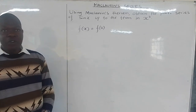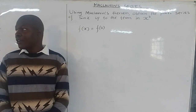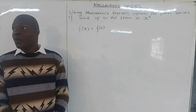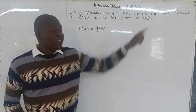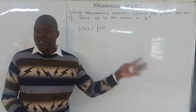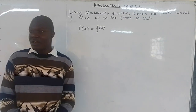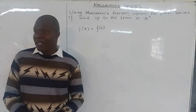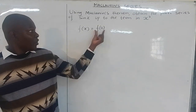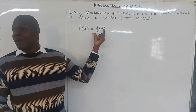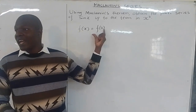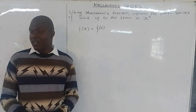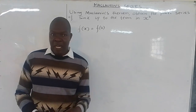If you differentiate three times, the third derivative gives you x cubed. The second derivative gives x squared, the first derivative x to the power 1, and no differentiation means x to the power 0. Anything raised to power 0 is 1, so that term has x to the power 0, which equals 1 — that's why x is not explicitly written there.